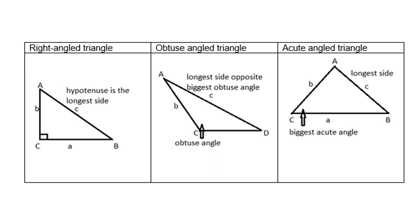Looking at the different types of triangles: the first is a right-angled triangle, where the hypotenuse is the longest side, always found opposite angle C, which is 90°. Then an obtuse angle triangle, where angle C is obtuse — greater than 90° — and that side is still the longest, since the longest side is always opposite the biggest angle. Then there is the acute angle triangle, where you find the biggest acute angle C, and the longest side is opposite C. For the theorem of Pythagoras, we use a right-angled triangle, where AB is the hypotenuse and AC and BC are the other two right-angle sides.